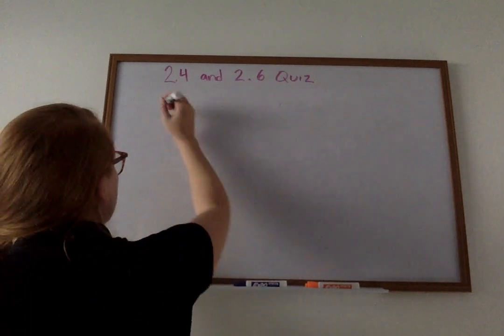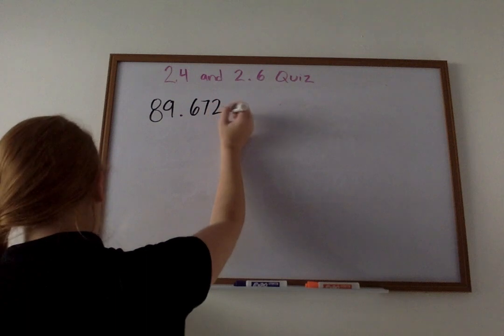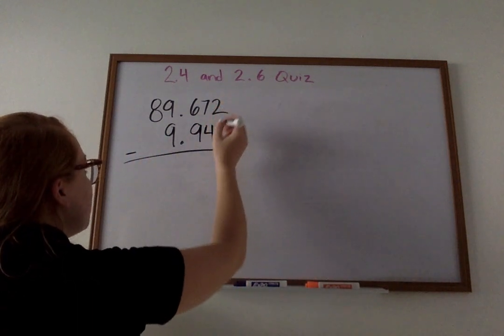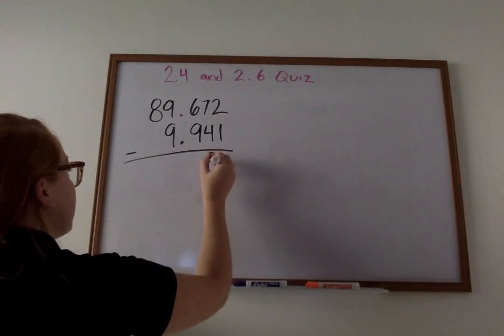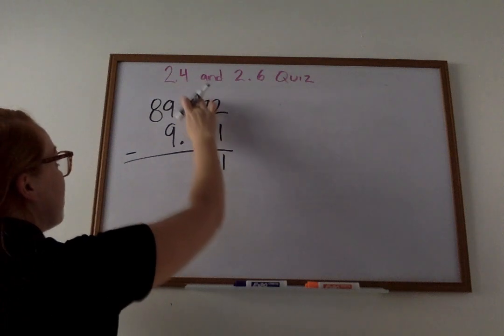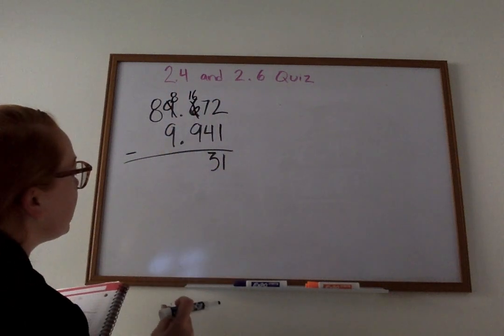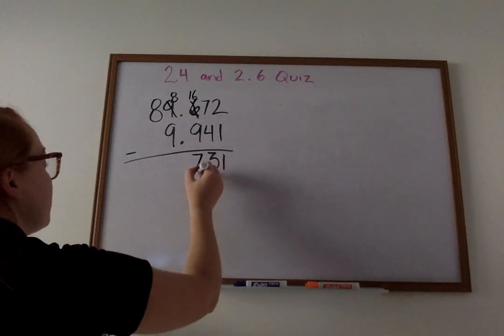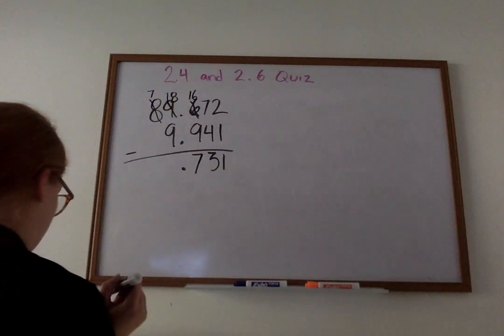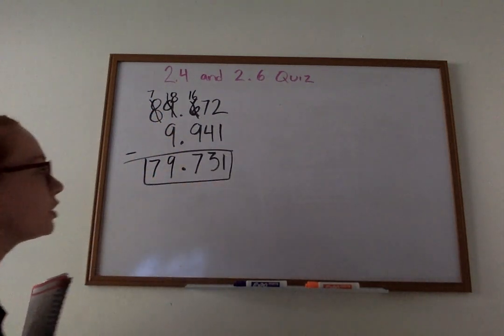Now on Lesson 2.6, here are some example problems. It might give it to you, already set up on your paper, 89 and 672 thousandths, subtracted by 9 and 941 thousandths. 2 minus 1 is 1. 7 minus 4 is 3. 6 minus 9, I can't do that. So what I'm going to have to do is I'm going to have to come over and I'm going to have to borrow from my 9. My 9 becomes an 8. My 6 becomes a 16. Then we have 16 minus 9, which is 7. Bring down my decimal. 8 minus 9, I can't do that either. I've got to cross out this 8. This 8 becomes a 7. This 8 becomes an 18. 18 minus 9 doubles fact, 9. 7 minus nothing becomes a 7. So 79 and 731 thousandths.